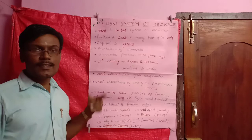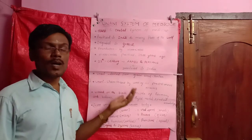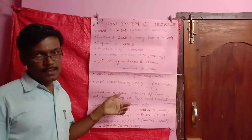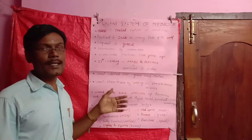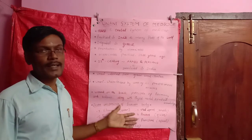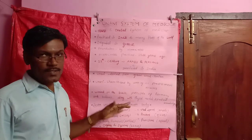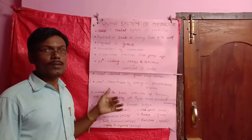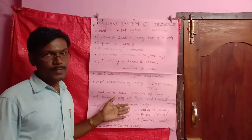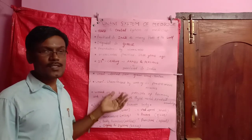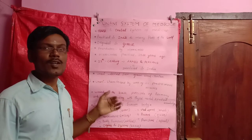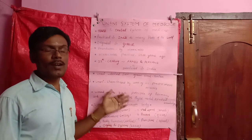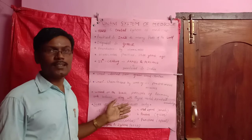These seven natural components interact with each other to maintain the balance of the human body. These are the general introduction about the Unani System of Medicine. In the next class, I will explain the principles as well as the treatment of Unani System of Medicine. Thank you all.